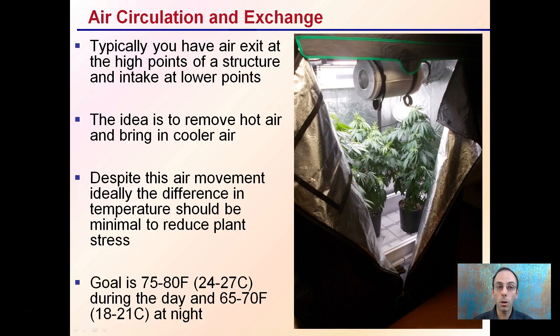Air circulation and exchange is important. Typically, you have air exit at the top points of a structure. This is a grow tent here with an exhaust fan. It exhausts air out the top of the structure, and intake comes in at the lower points. The idea is to remove hot air and bring in cooler air.